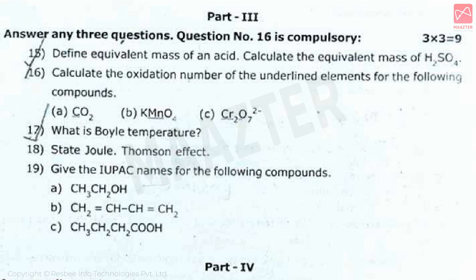The next 3-mark question: give the IUPAC name for the following compounds. Part A is CH3CH2OH. Part B is CH2=CH-CH=CH2, which is an alkene node for IUPAC naming. Part C is CH3CH2CH2COOH, which is an acid. IUPAC names are to be calculated for all three compounds.